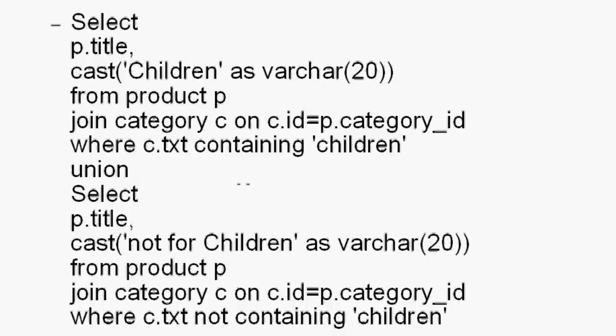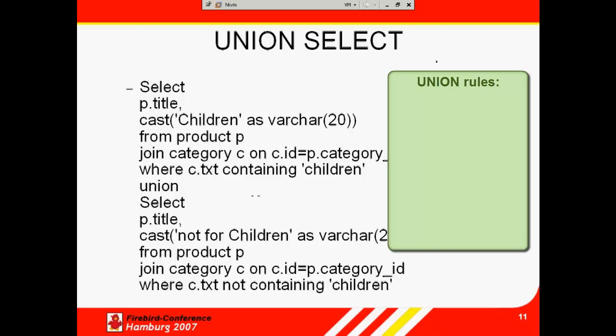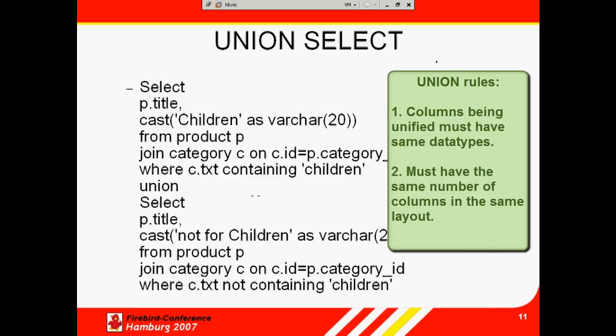All these results — that is, every other category that isn't explicitly for children — will contain the category text 'not for children', regardless of their genre. This artificial field supplies information that is not directly in the database in that form. The rules for joining together two result sets are that you must have columns with the same data types — you cannot mix integers and blobs in a single result column — and you must have the same number of columns in the same layout. For example, if your current orders table has 50 columns and the archive only 30, you can only select common columns, a maximum of 30, for the union select.